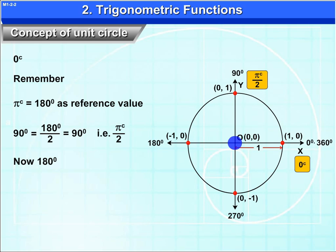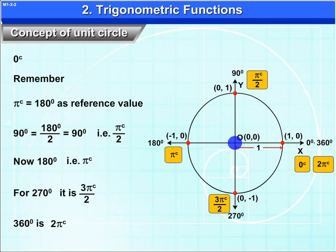Now, 180 degrees is pi radians. For 270 degrees, it is 3 pi upon 2 radians. And again, 360 degrees is 2 pi radians.